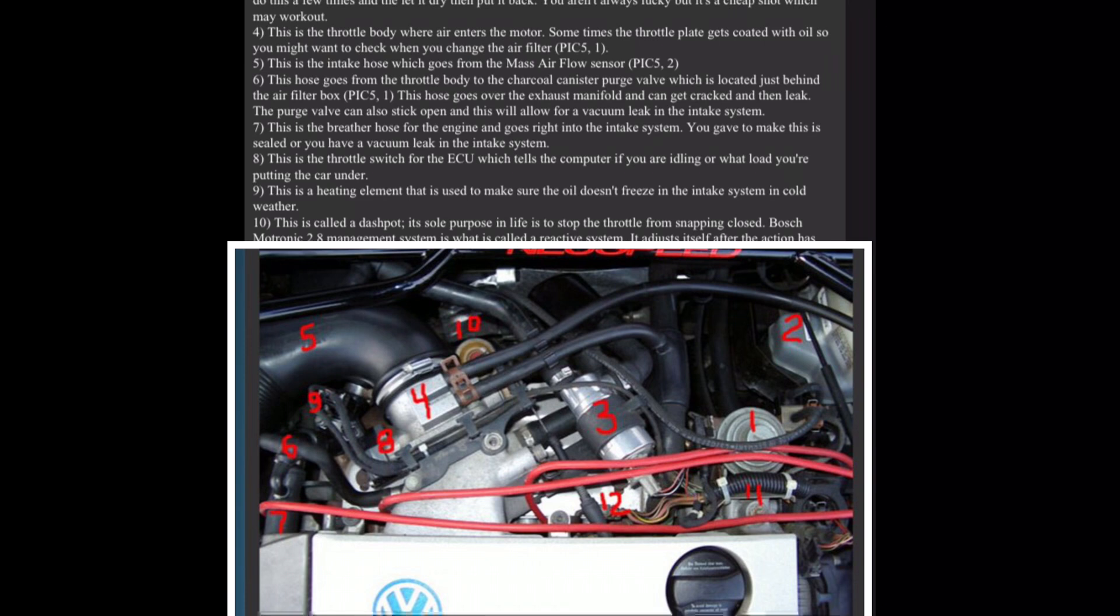This is the throttle body where air enters the motor. Sometimes the throttle plate gets coated with oil, so you might want to check when you change the air filter, pick five, one. Five, this is the intake hose which goes from the mass airflow sensor, pick five, two. Six, this hose goes from the throttle body to the charcoal canister purge valve, which is located just behind the air filter box, pick five, one. This hose goes over the exhaust manifold and can get cracked and then leak. The purge valve can also stick open and this will allow for a vacuum leak in the intake system.